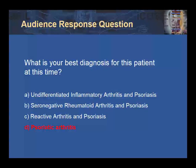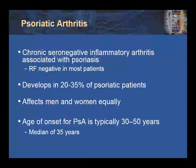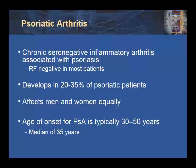Let's talk about psoriatic arthritis. Psoriatic arthritis is a chronic, seronegative inflammatory arthritis that is associated with psoriasis, and rheumatoid factor is negative in the vast majority of patients. Psoriatic arthritis will develop in approximately 20 to 35 percent of all patients with psoriasis, and it affects men and women equally. The age of onset is typically between 30 and 50 years, with a median age of onset of 35 years.